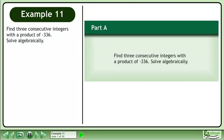Find three consecutive integers with a product of negative 336. Solve algebraically.